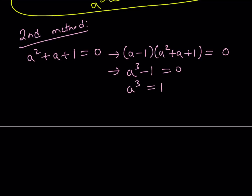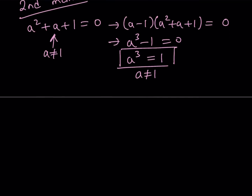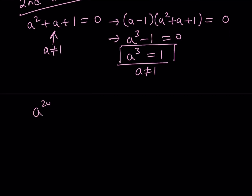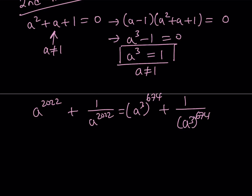Does that mean a equals 1? No — because we know a equals 1 does not satisfy this equation. Therefore a does not equal 1, but a cubed equals 1. You always have to keep that in mind, because a is not a real number here. The only thing you need to know is a cubed equals 1 and a does not equal 1. So let's evaluate a to the power of 2022 plus 1 over a to the power of 2022. Since a cubed equals 1, we can write this as (a³)^674 plus 1 over (a³)^674, because 3 times 674 gives us 2022. Since a to the third power is 1, this becomes 1 plus 1, and the answer is 2 again.